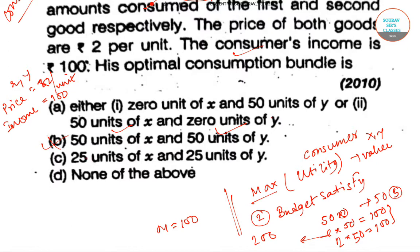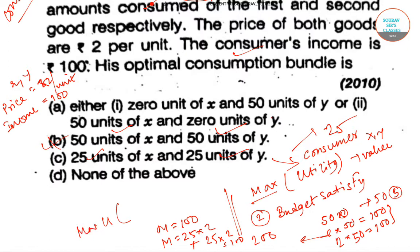Another option is 25 units of x and 25 units of y. This satisfies our budget constraint because 25×2 + 25×2 = 100. But if we substitute into the maximization function, our utility is only max(25, 25) = 25.